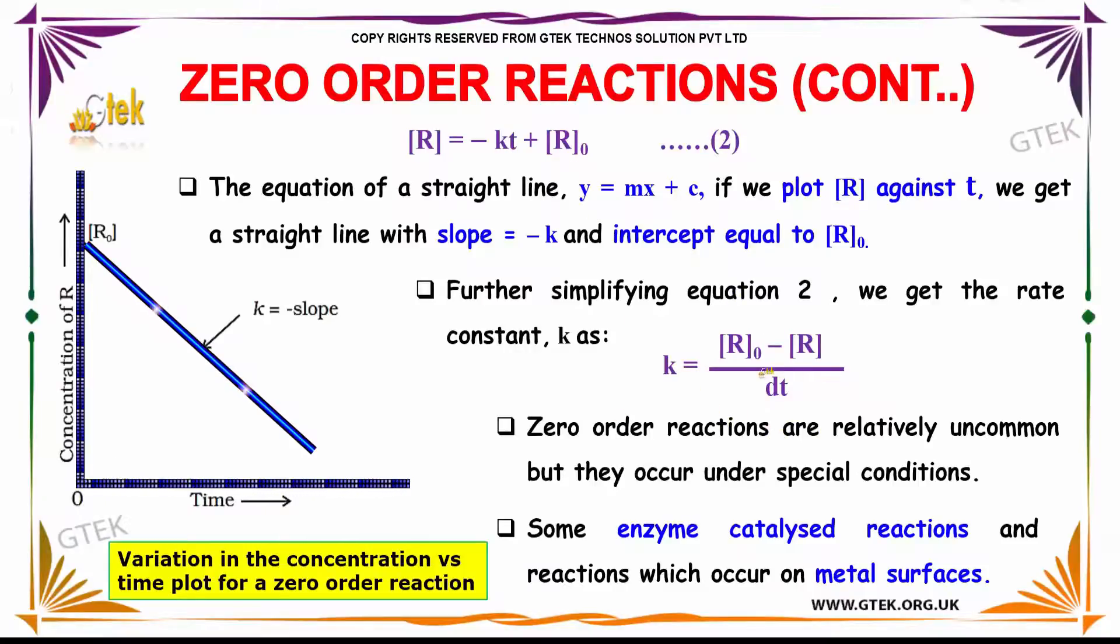Zero-order reactions are relatively uncommon, but they occur under special conditions. Some enzyme catalyzed reactions and reactions which occur on metal surfaces are typical examples of zero-order reactions.